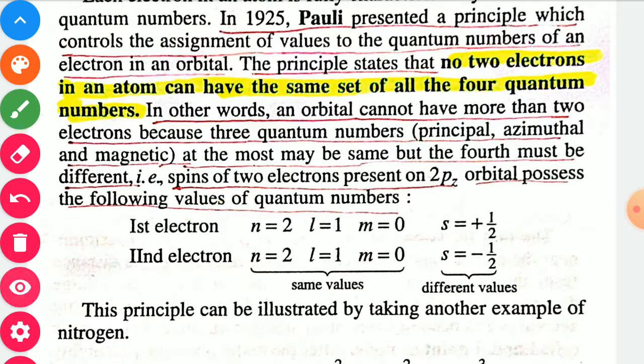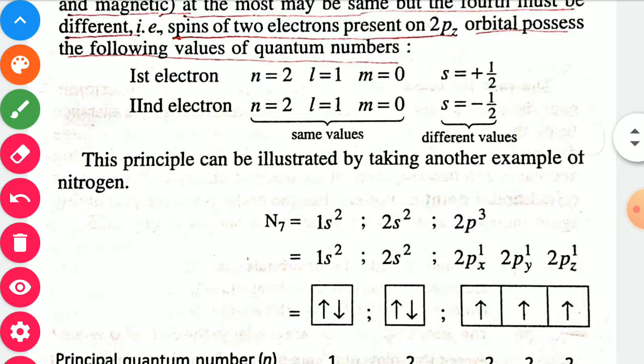This principle can be illustrated with another example. For nitrogen, N7, meaning nitrogen with atomic number 7, the electronic configuration in terms of sub-shells is 1s2, 2s2, 2p3.